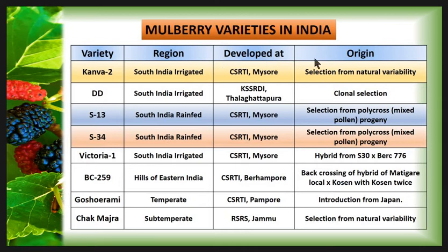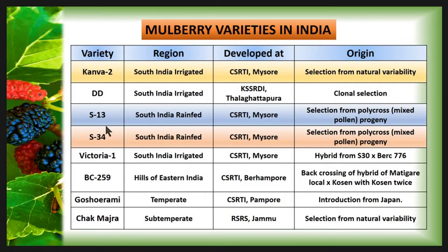The first is the Karnataka variety, mainly planted in South India under irrigated conditions, developed by CSRTI Mysore. Next is the DT variety, also mainly planted in South India under irrigated conditions, developed by KSS RDI Thalagattapura, and originated from clone selection. The S13 variety is mainly planted in South India under rain-fed conditions, developed by CSRTI Mysore, and originated from polycross progeny.